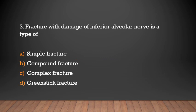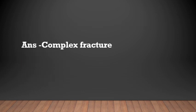Fracture with damage to the inferior alveolar nerve is a type of — symbol fracture, compound fracture, complex fracture, or greenstick fracture? The answer is complex fracture. Complex fracture is associated with adjacent soft tissue injury, and fracture with injury to the inferior alveolar nerve is an example of complex fracture.